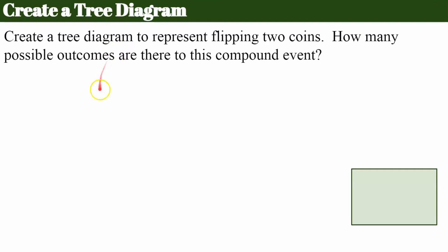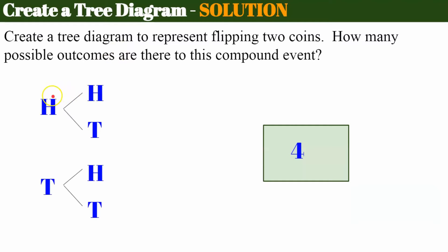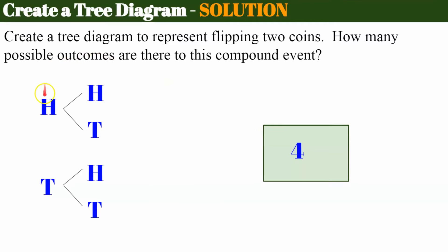Welcome back. Let's see how you did. So I'm creating my tree diagram. Here's my first branch — when I flip the first coin, I can get heads or tails. This represents the second toss. On my second toss, I might have had heads on the first and then heads on the second, or heads on the first and tails on the second. If I got tails on the first, I would get heads on the second or tails on the second. So from this tree diagram, after flipping a coin two times, there are four different possible outcomes to this compound event. It's compound because I'm flipping it once and flipping it again.